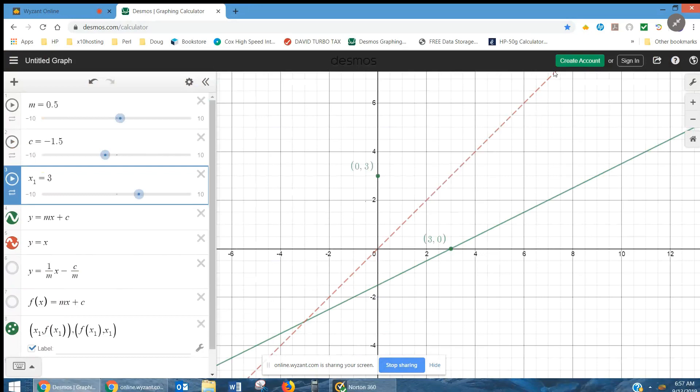Here is the line y equals x, the dotted red line. Here's the line, the green line, y equals mx plus c. And, I can change the values of m or c to change where that line appears.